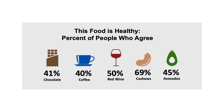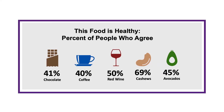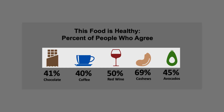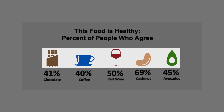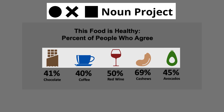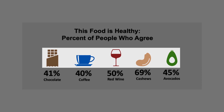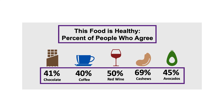I created this visual by adding a light gray rectangle, then found icons to match the different foods. In this instance, I used The Noun Project and applied a specific color for an added visual. Then I added text for the title, percentages, and each food type.